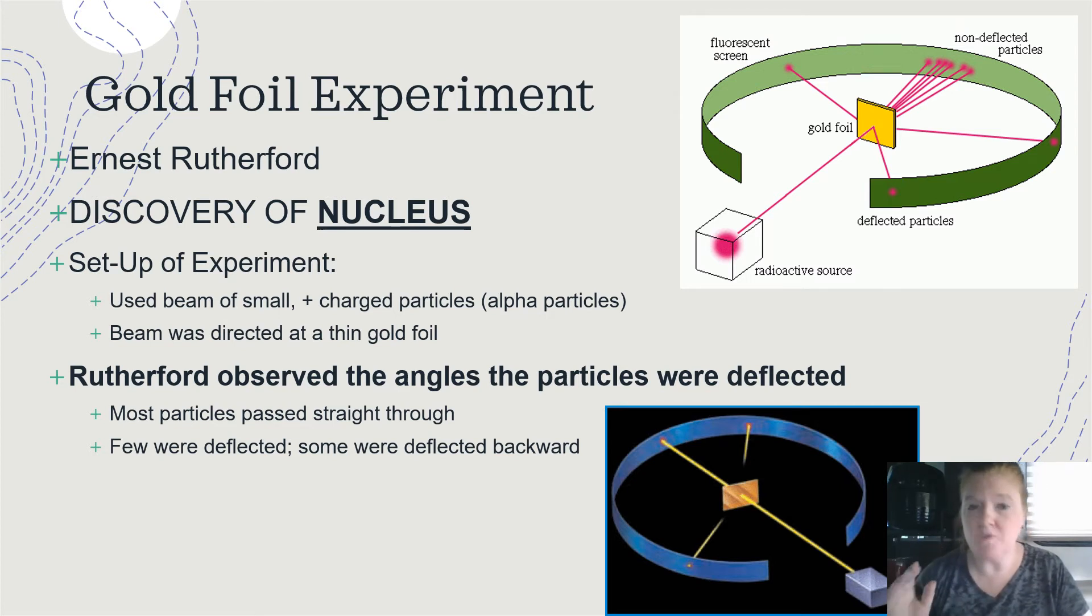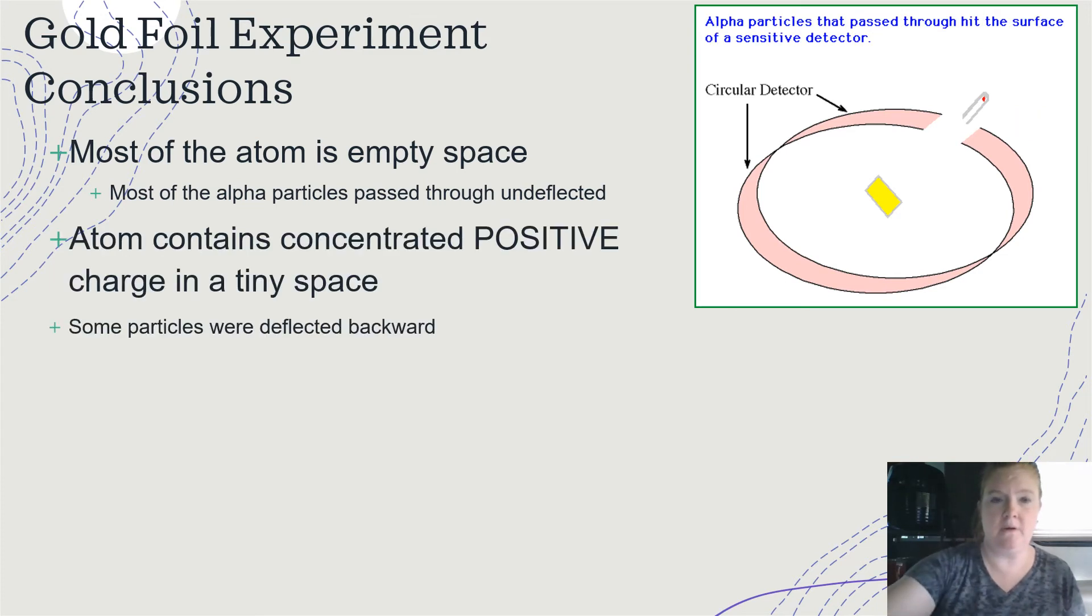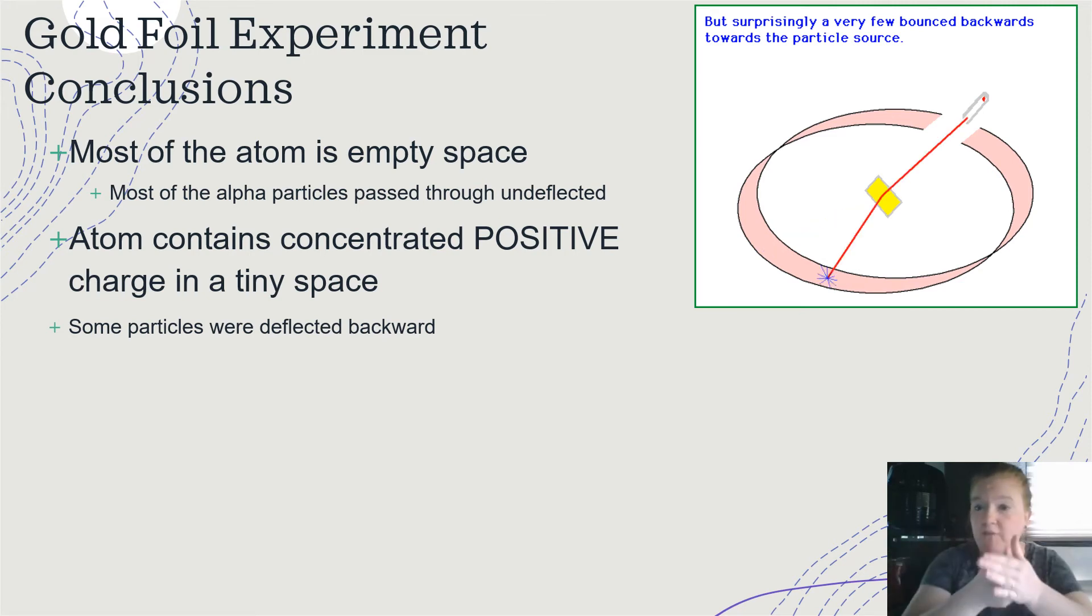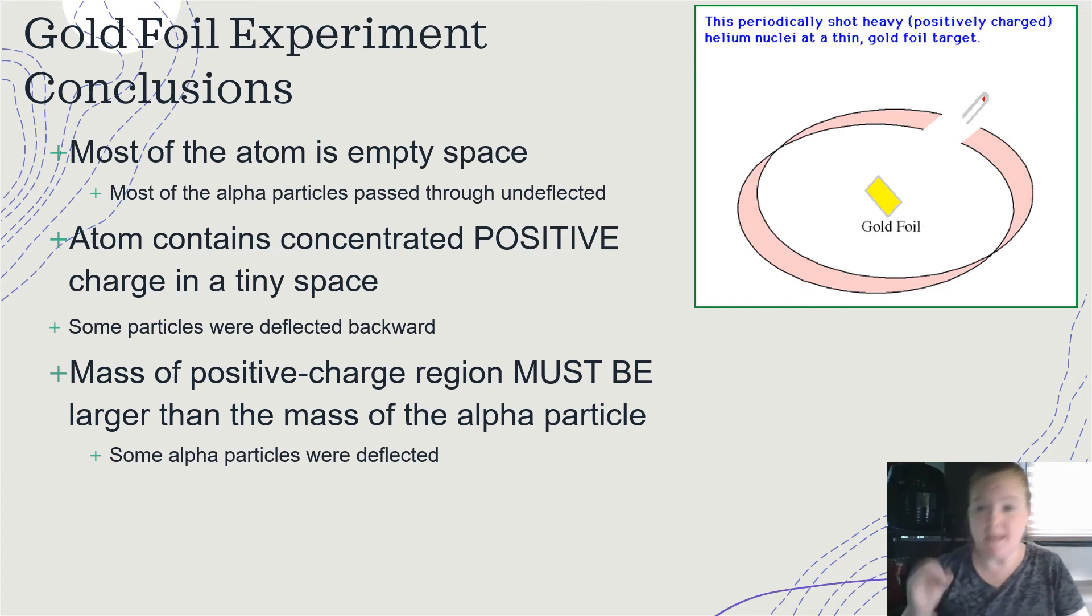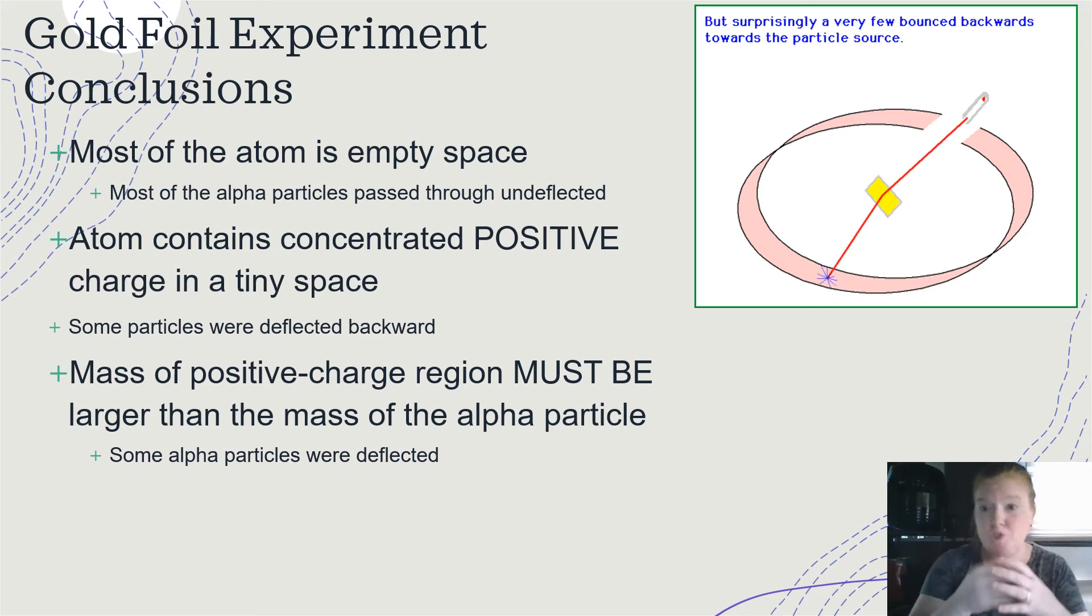But not all the particles did go through. Some were deflected, and some were deflected backward, like at really strange angles. So what were the conclusions? Most of the atom is empty space. Otherwise, why would the particles go through? The atoms contained a concentrated positive charge in a tiny space. So there was the mass of an atom in a tiny little space, and it had to be positive because the alpha particles were positive. So when the alpha particles bounced into that central positive mass, they bounced back. Okay, they weren't attracted to it. They were reflected away from it. And the mass of that positive charge region has to be larger than the mass of the alpha particle. Remember, Rutherford was using gold foil, so we're talking about gold atoms. And so remember, the alpha particles were deflected. So the mass of whatever was in the center there was large enough to deflect.